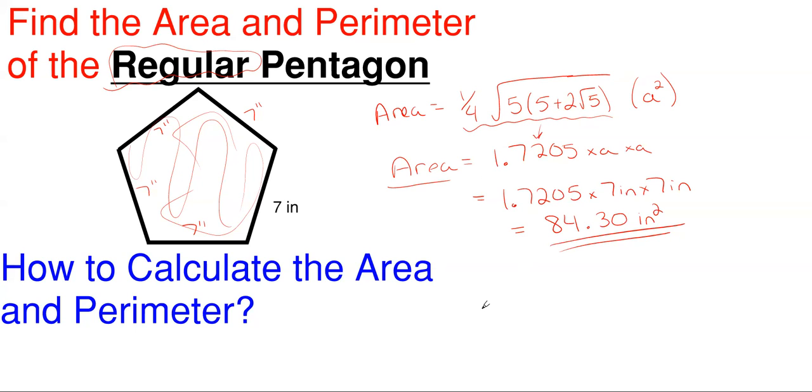All right, so our next one is perimeter. Perimeter is just how much it takes to get all the way around your object.